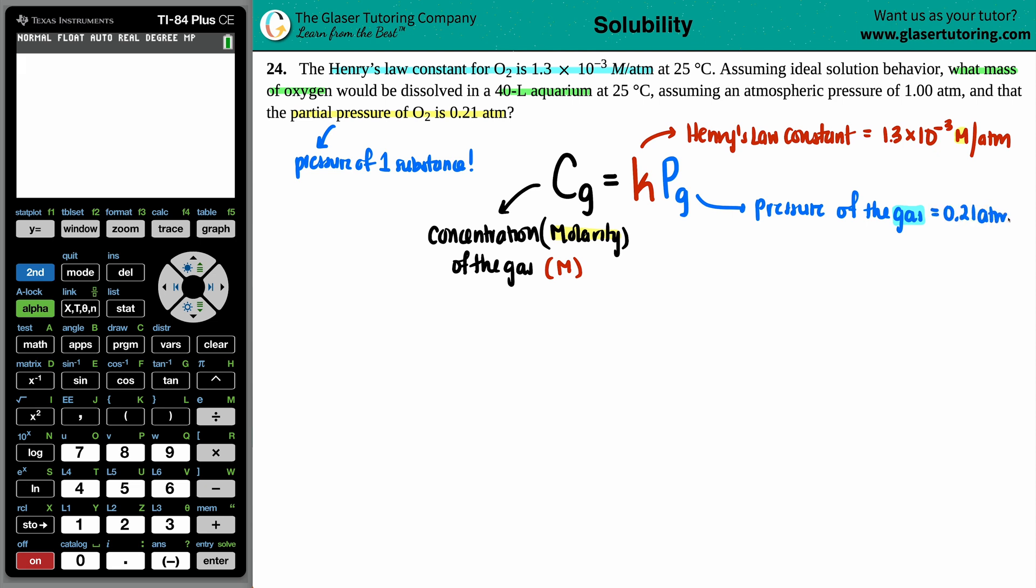And just make sure that your units match, but it looks good to me because ATM in the Henry's law goes with the ATM of the partial pressure. So why did they give you atmospheric pressure? I don't know. Extra information just to make sure that you knew which pressure to pick? How rude. But they won't get us, right? So in this case, we have the K value, we have the P value, so we can find the molarity. So let's go for it.